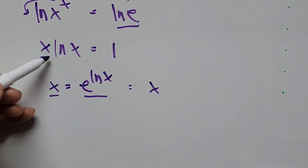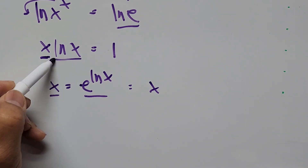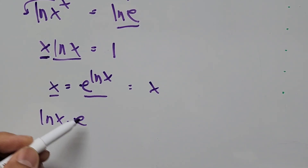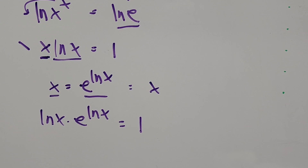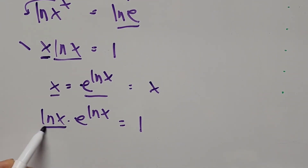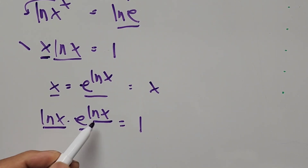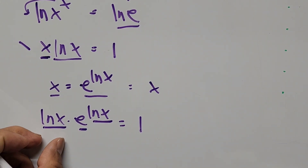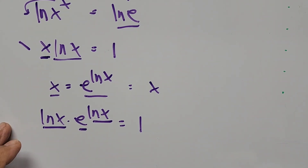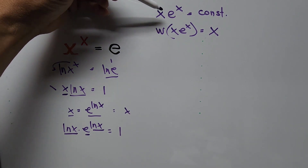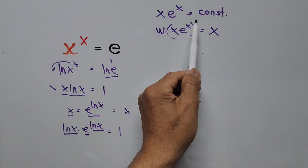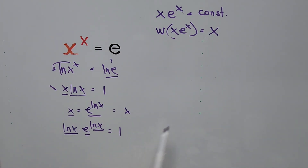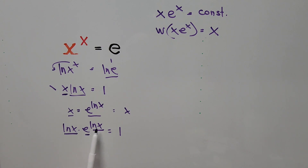We substitute that representation of x into our equation. Writing this out, we get: ln of x times e to the power of ln of x equals 1. Now notice that the left-hand side is in the form of x times e to the power of x, where x is actually represented by ln of x. We have the constant 1 on the right-hand side, so we have exactly the required Lambert W form.